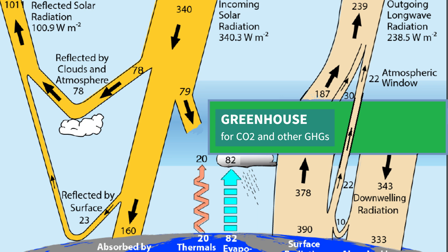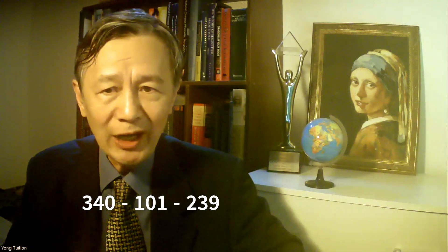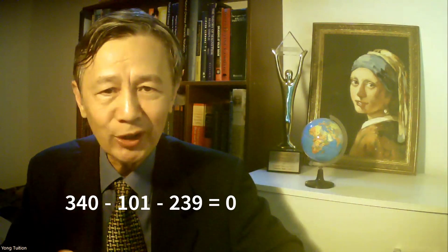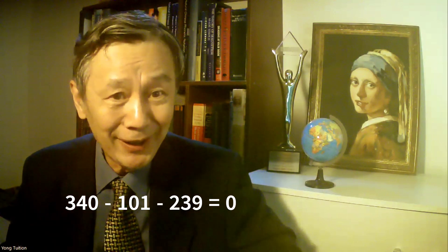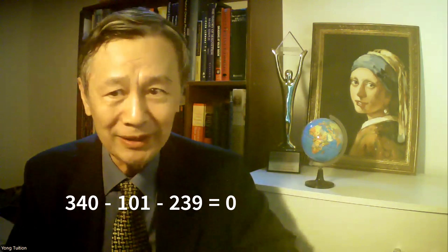Let's have a closer look at the energy balance condition at the top of the atmosphere, TOA. One only needs primary school arithmetic. I used the three integers he printed on the relevant arrows for the cash flow in units of watts per meter squared: incoming solar radiation 340, reflected solar radiation 101, and outgoing longwave radiation 239. 340 minus 101 minus 239 equals zero — perfectly balanced, no EEI, no imbalance whatsoever, no warming, no cooling.